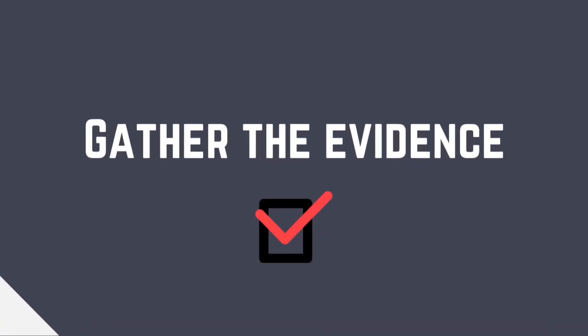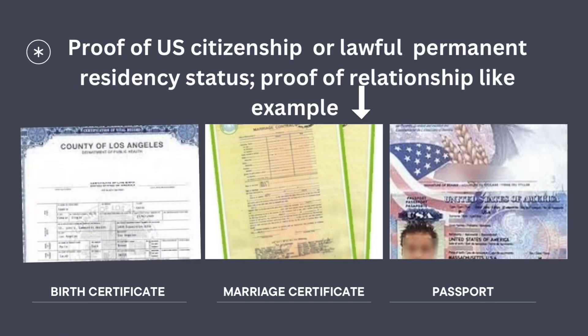Checklist number one: gather the evidence. This includes documents proving your US citizenship or lawful permanent residency status, and proof of your relationship with your beneficiary — for example, birth certificate, marriage certificate, and passport information.